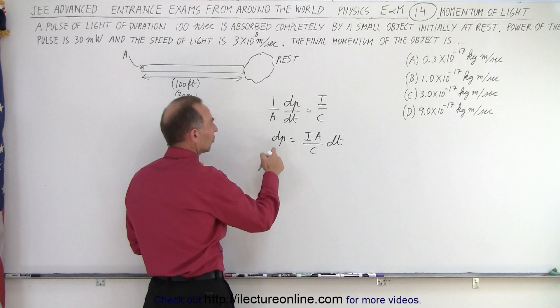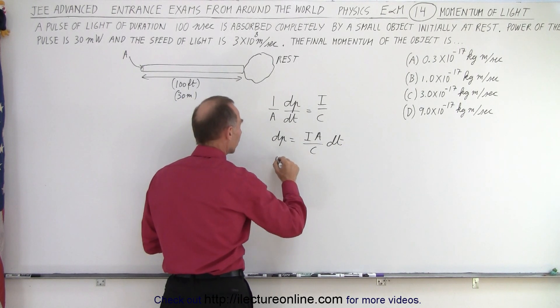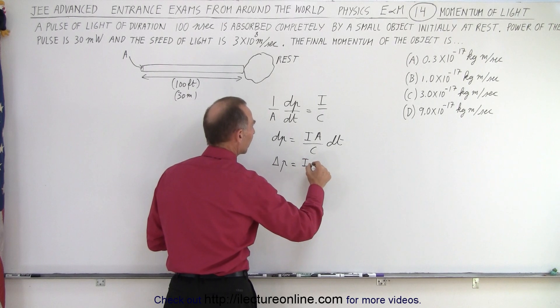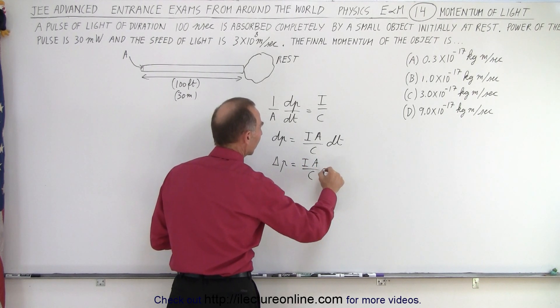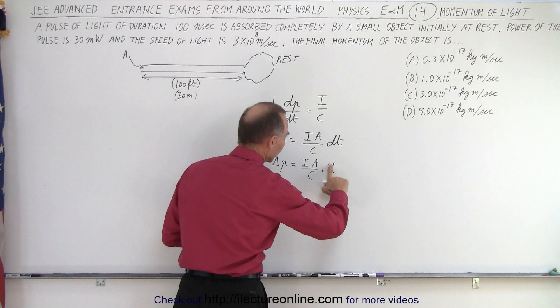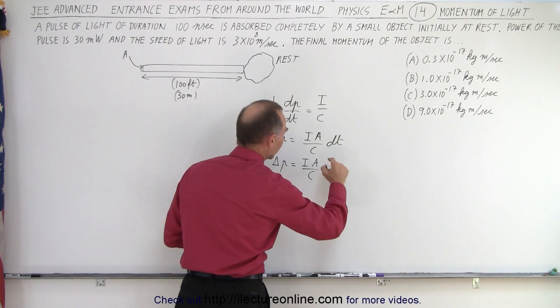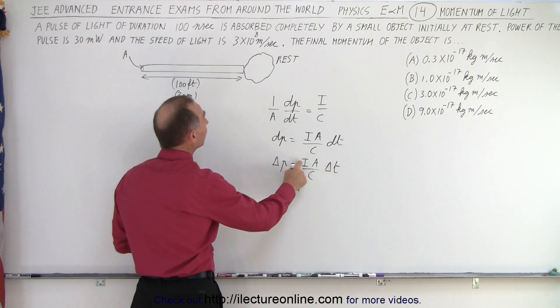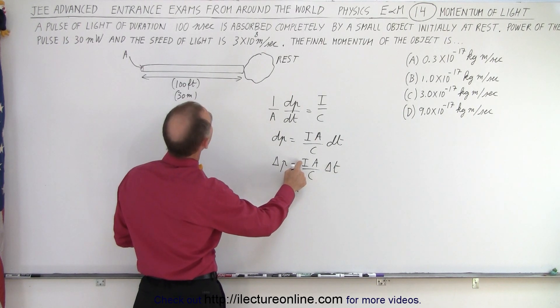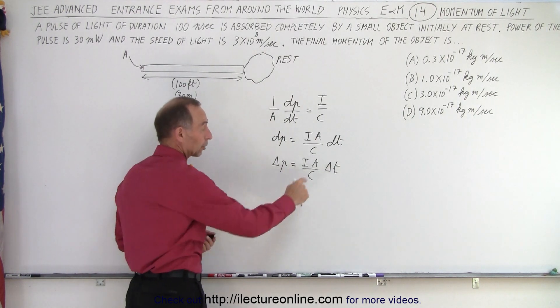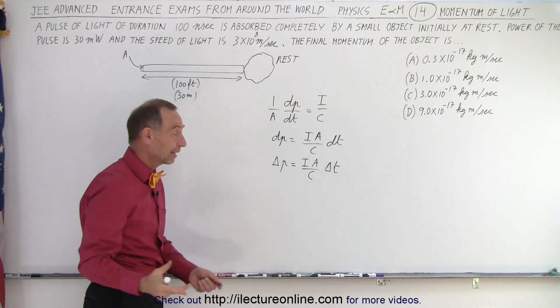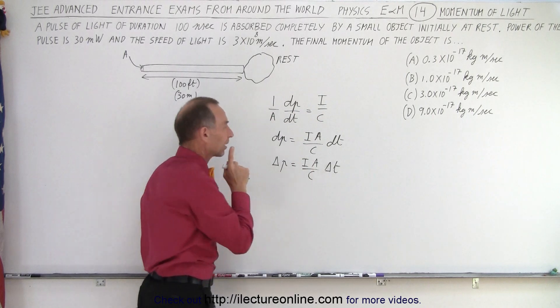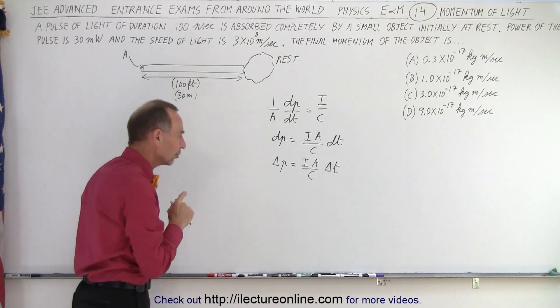And of course, we can instead of calling it dp and dt, we can call it a small change in the momentum delta p equals the intensity of the light times the cross-sectional area divided by c times delta t. Now notice, the intensity is not given. The cross-sectional area, not given. We know the speed of light and we know the time elapsed, which is 100 nanoseconds. So how do we get those two values?